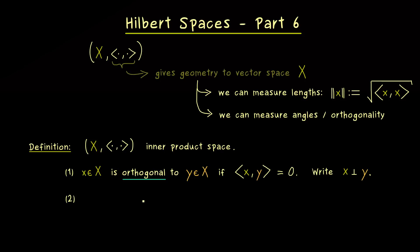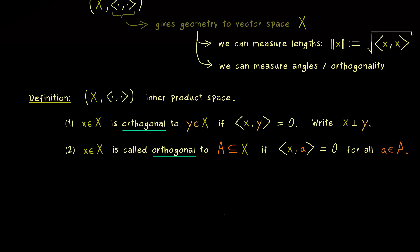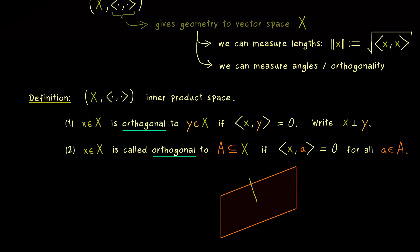We can also easily extend the term to a whole subspace of X. We say that vector x is orthogonal to a subspace A — and note, this can be any subspace, in particular an infinite dimensional one — if for every vector a from the subspace, the inner product ⟨x, a⟩ equals zero. Just imagine a given subspace A inside our vector space X, and then x has to be orthogonal to each vector inside A, so in general we would have infinitely many conditions.